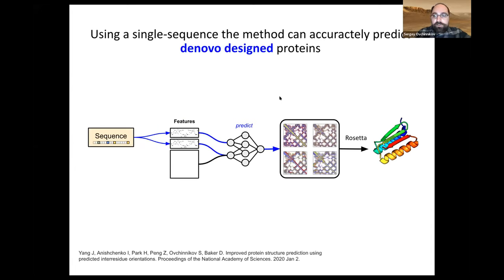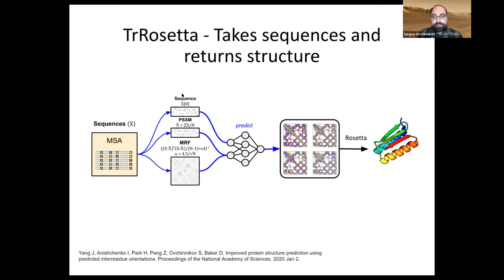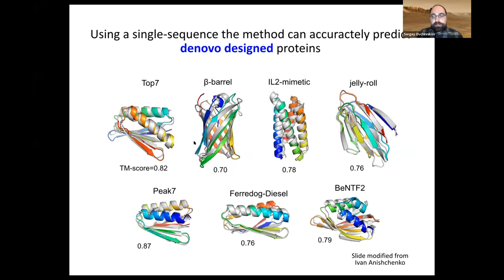One interesting thing that Yvonne Nishinka noticed: if you take de novo design proteins — which by definition only have a single sequence — and feed them to TrRosetta, it actually does a really good job at predicting the structure. Even without a multiple sequence alignment, just feeding a single one-hot encoded sequence, the predicted structures overlay really nicely.